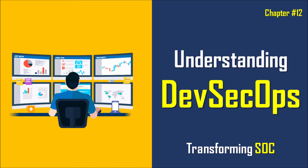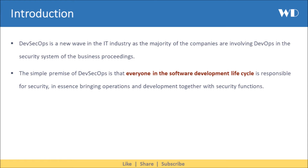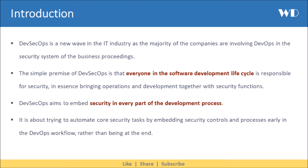DevSecOps is a new wave in the IT industry, as the majority of companies are involving DevOps in the security system of business proceedings. The simple premise of DevSecOps is that everyone in the software development lifecycle is responsible for security, in essence bringing operations and development together with security functions. DevSecOps aims to embed security in every part of the development process.